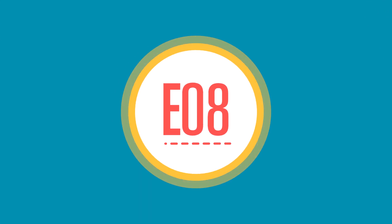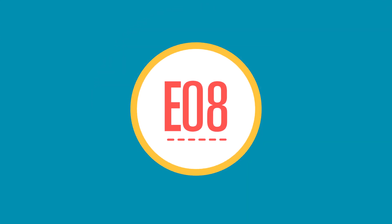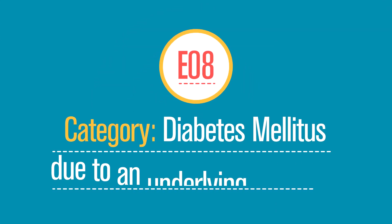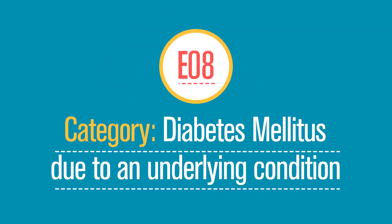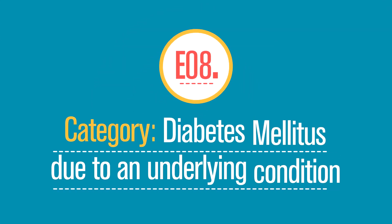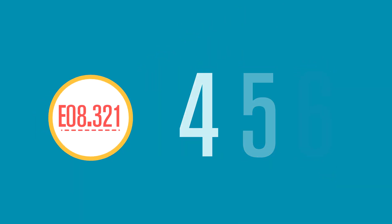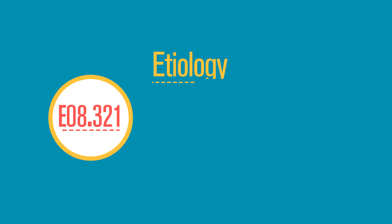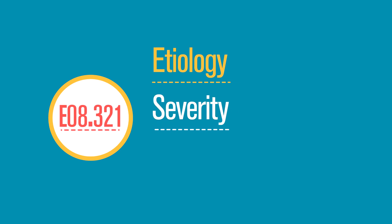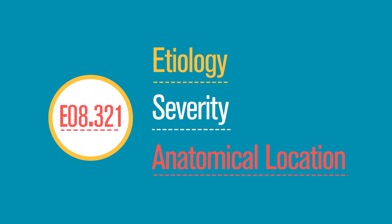The first three characters represent the category of disease or health condition, followed by a decimal point. The fourth, fifth, and sixth characters represent clinical details, such as the cause of the disease, its severity, and its anatomical location.